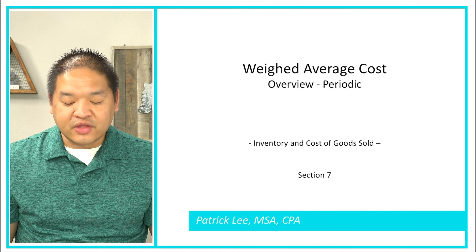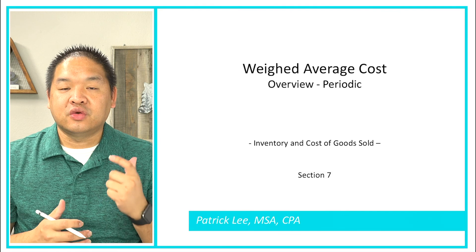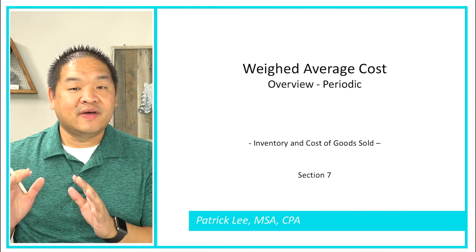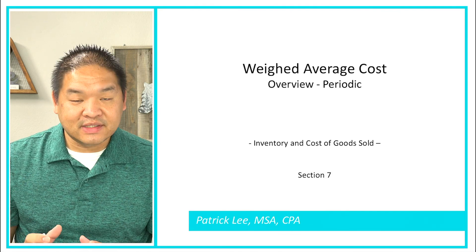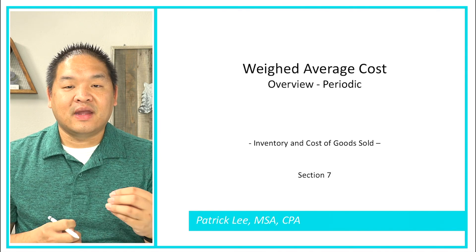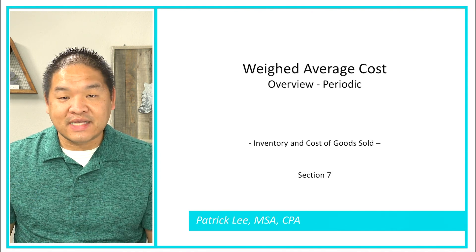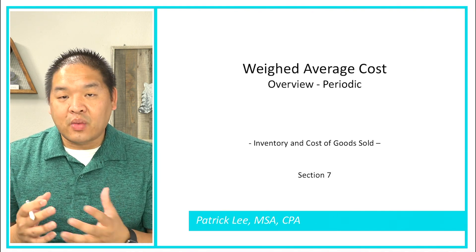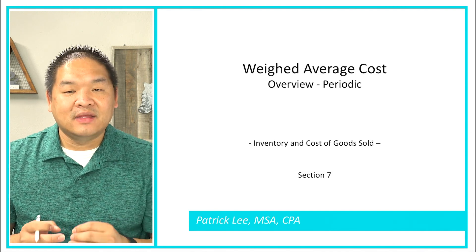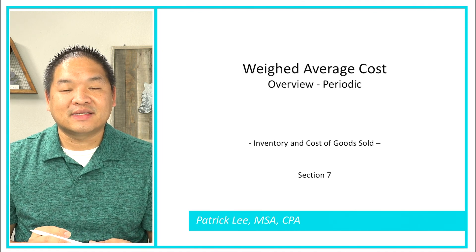That is a look at the weighted average costing method — the overview, the two steps, and a simple example of how to apply it. In the next lesson, we're going to do a comprehensive example where we'll work through quantities as well. Hope you enjoyed this lesson, and we'll see you in the next video.